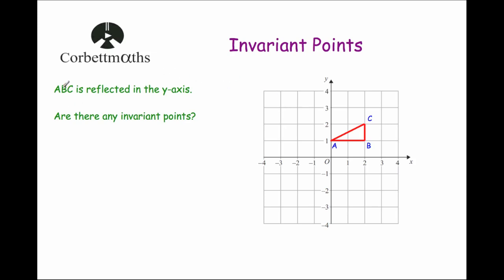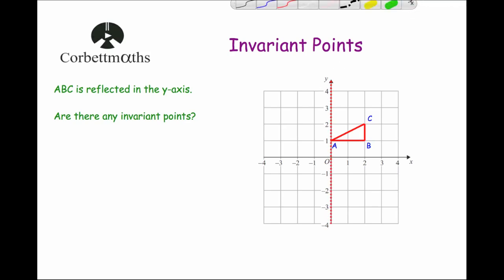Let's take some questions. So here we've got a triangle ABC — it's a right angle triangle. The question says ABC is reflected in the y-axis. Here we've got the y-axis and that's going to be the mirror line, and we're going to reflect it in that mirror line. If a point is on the mirror line, it's going to stay there. So that will be where A was.